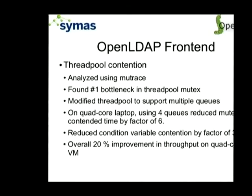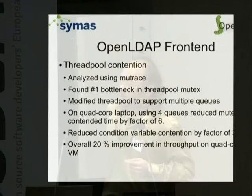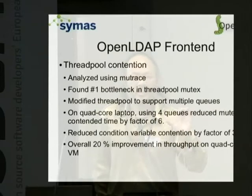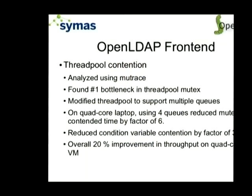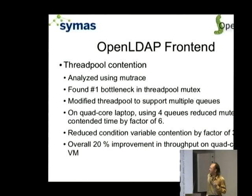A few months back I discovered a really handy tool called MuTrace — a mutex tracer that shows you where, in your multi-threaded programs, all of your lock time is going. This was an eye-opener for us. We found that the number one bottleneck in the SLAPD execution code was in our thread pool, which has a single mutex controlling access to all of the work queue. Just a slight tweak to allow the thread pool to use multiple queues meant that on a quad-core laptop, splitting to use four work queues dropped thread contention by a factor of six — a very powerful improvement.